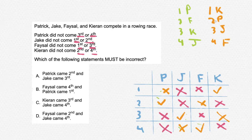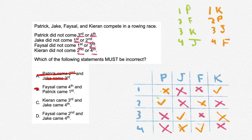Let's start comparing this to the multiple choice answers. 'Patrick came 2nd and Jake came 3rd' — as you can see in the 2nd column, this is true. 'Faisal came 4th and Patrick came 1st' — as you can see, in neither column is this true. Therefore, this answer is correct.